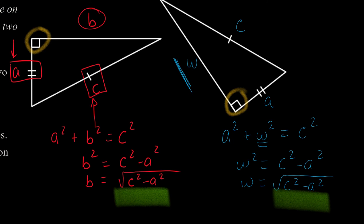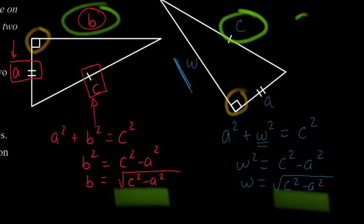We know that if we have two triangles with congruent hypotenuses and one congruent leg, then the other legs must be congruent as well. Therefore these two triangles are congruent by side-side-side congruence.